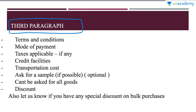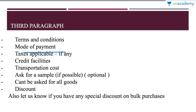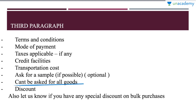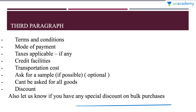In the third paragraph, you will mention other details such as: the terms and conditions of the company, the mode of payment they follow, taxes applicable if any, whether they offer credit facilities, the transportation cost and who will bear it. Then ask for a sample if applicable — for example, you can ask for a sample for a book or cloth material, but not for all goods. In the end, ask for a discount. You can say, 'Also let us know if you have any special discount on bulk purchases.'